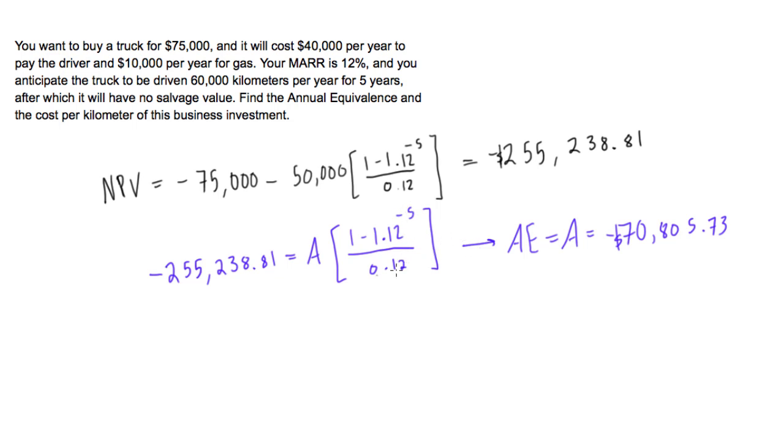If we want to calculate the cost per kilometer, all we have to do is divide this number by 60,000 for the kilometers. We'll have negative $70,805.73.